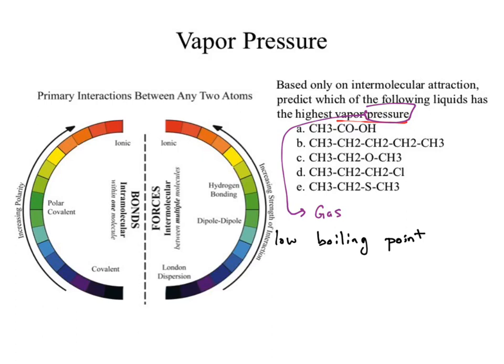What dictates boiling point? What is breaking when I do a boiling point? I'm breaking the forces. So a boiling point is about breaking forces. If I have a low boiling point, those forces would be weak — they're easier to break, less heat goes in. What would be my weakest force? It would be the London dispersion force. London dispersion forces come from what bond? Nonpolar covalent.